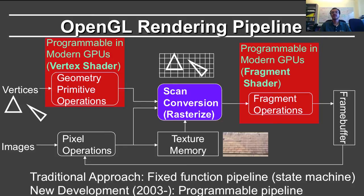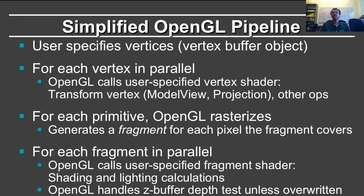This lecture is about how you set up the bare-bones no-op fragment and vertex shaders and hook them into OpenGL. In the simplified OpenGL pipeline: user-specified vertices go into a vertex buffer object, and for each vertex in parallel, OpenGL calls the user-specified vertex shader, which transforms the vertex — in the simplest case, just applying model view and projection matrices.